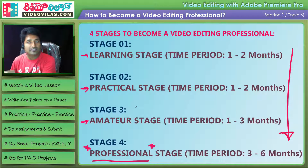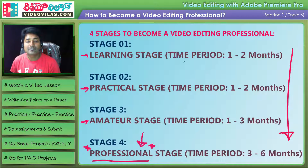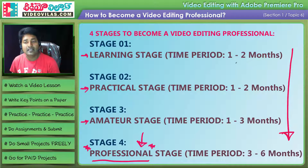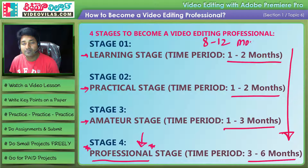You need to understand all four stages. When you can earn 10,000 rupees maximum per project, you are definitely in the professional stage. This is the minimum benchmark. If you follow this path, you will become a strong professional.